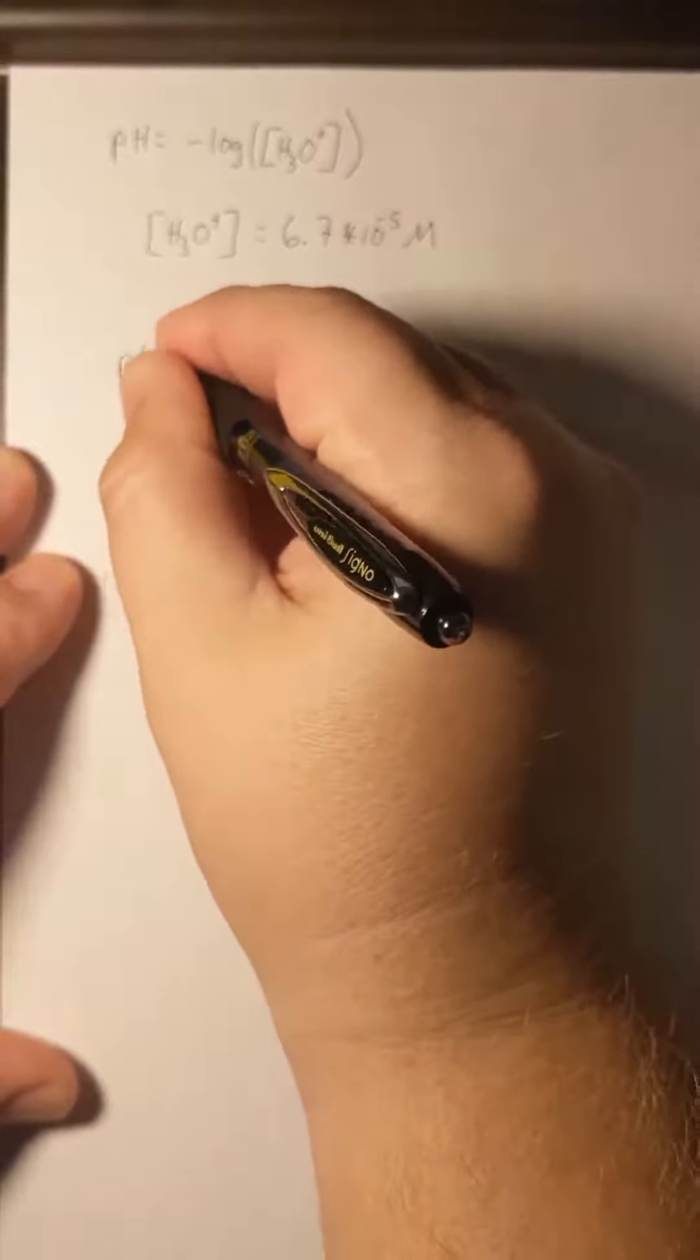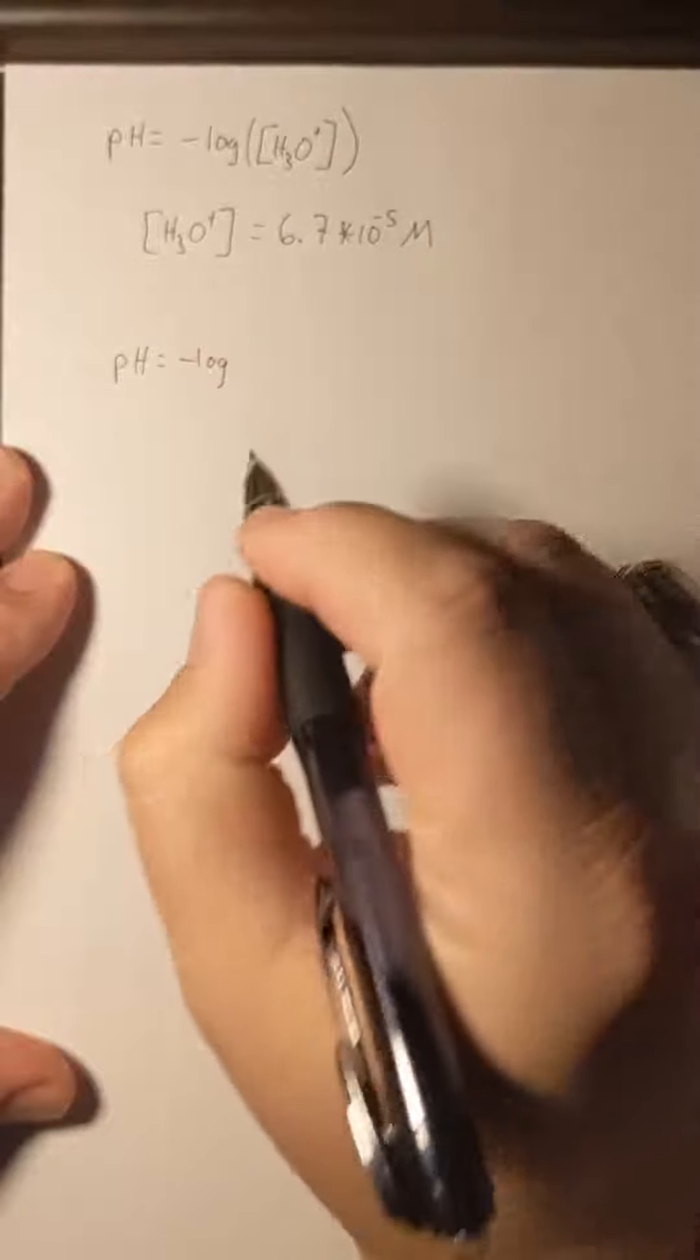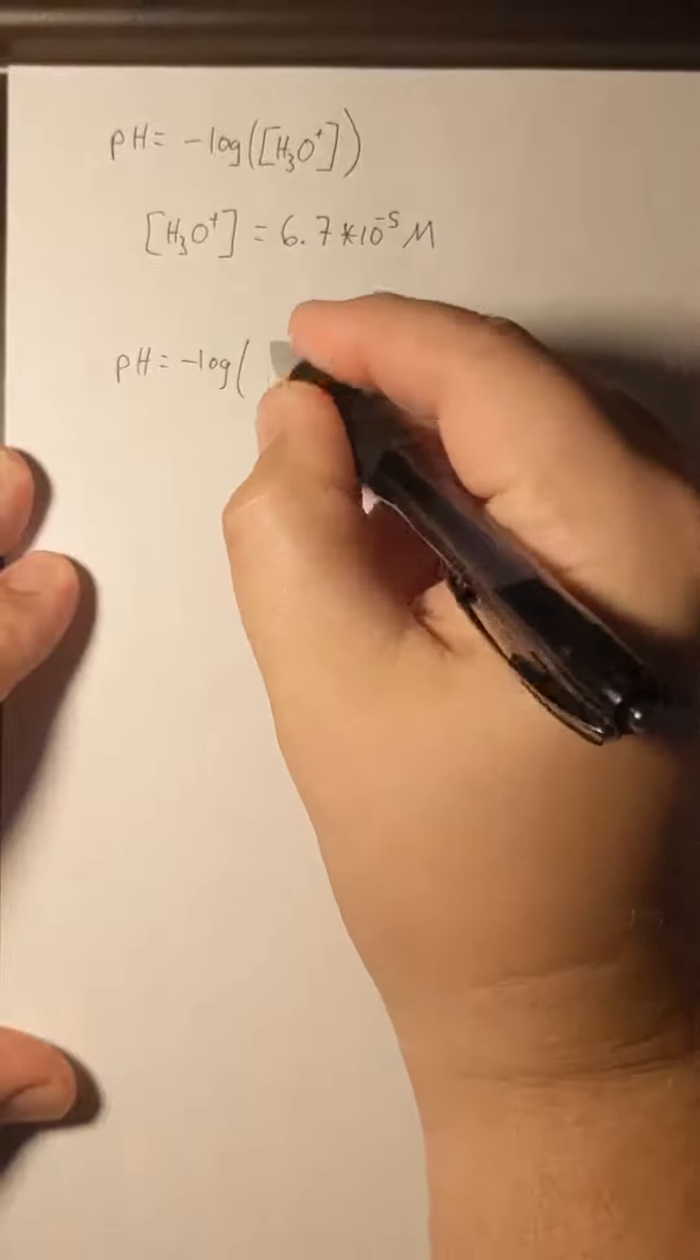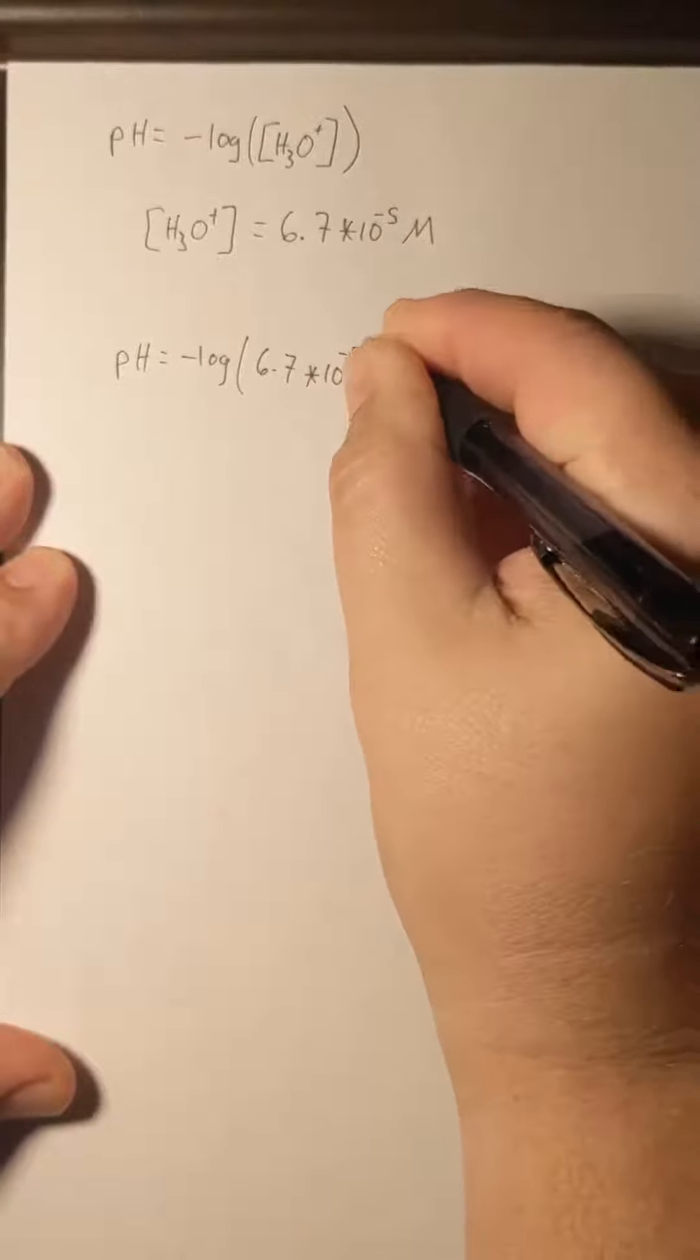So our pH will equal the negative log, and don't forget that negative sign when we're going to type it in the calculator, of 6.7 times 10 to the minus 5.